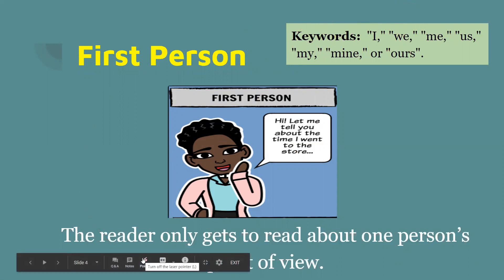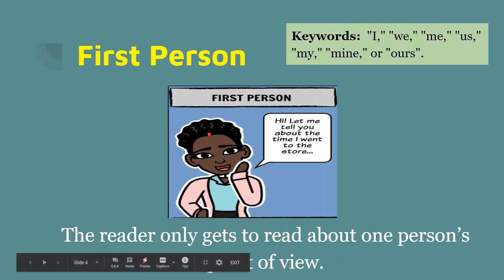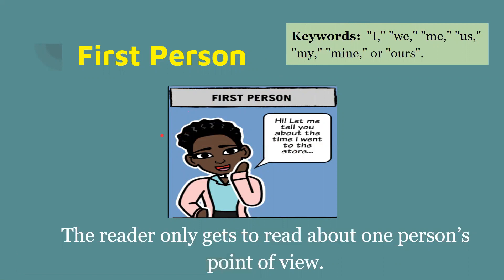The reader only gets to read about one person's point of view in first person point of view. So here's an example: 'Hi, let me tell you about the time I went to the store.' This person is the only point of view we get to see. We don't get to see the cashier's point of view or any other customer's point of view at the store.